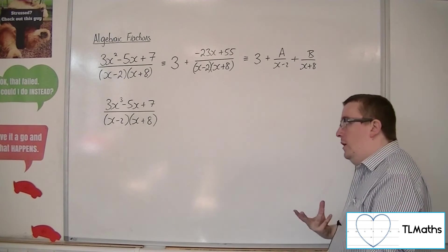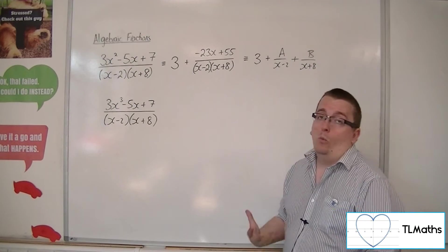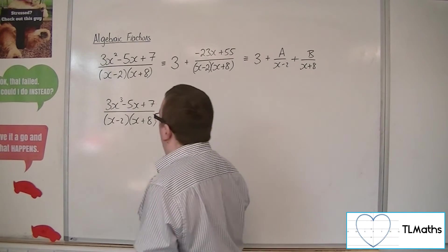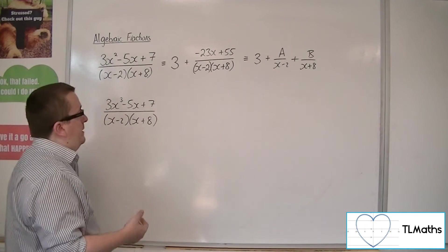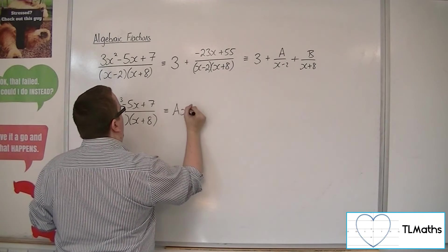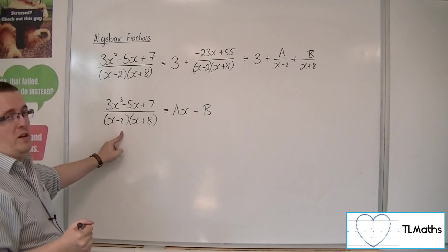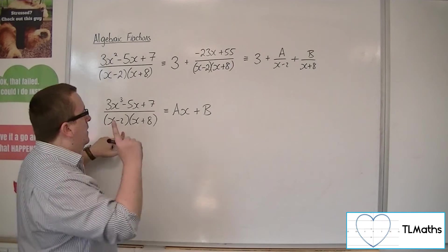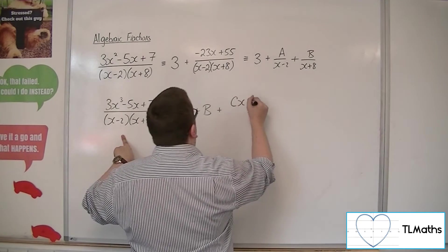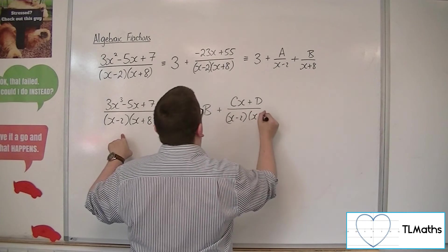So now if I used polynomial division, I know what's going to happen. I'm going to get a linear term, plus a remainder. So I'm going to get a linear term, an ax plus b, from the fact that I've got a cube divided by a squared, plus this cx plus d over the x minus 2 times x plus 8.